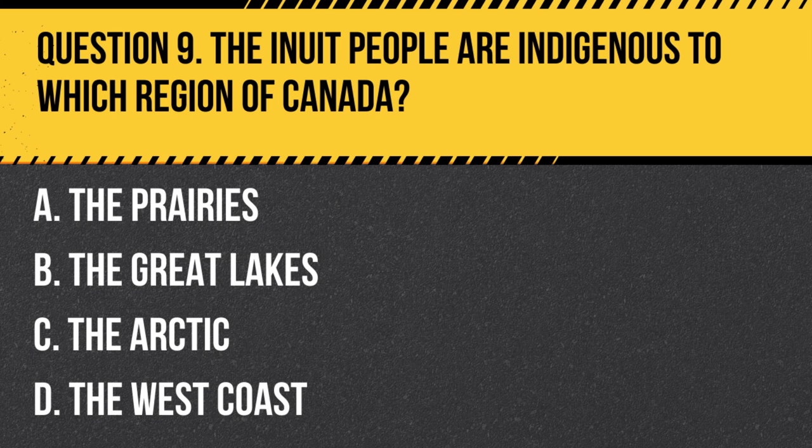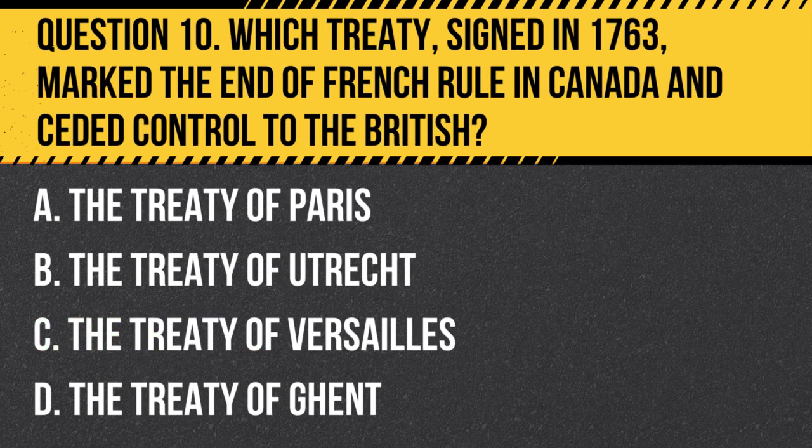Answer: C. The Arctic. The Inuit are a group of culturally similar indigenous peoples inhabiting the Arctic regions of Greenland, Canada, and Alaska.